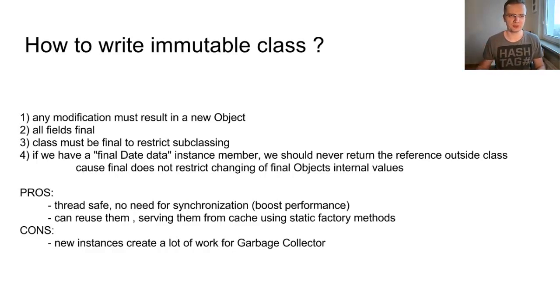If we have a final date data instance member, we should never return the reference outside of the class. The pros for the immutable class is that it's thread safe, so you don't need the synchronization, so it's better performance. You can reuse them, serving them from cache using static factory methods. The problem here is that new instances create a lot of work for garbage collector.